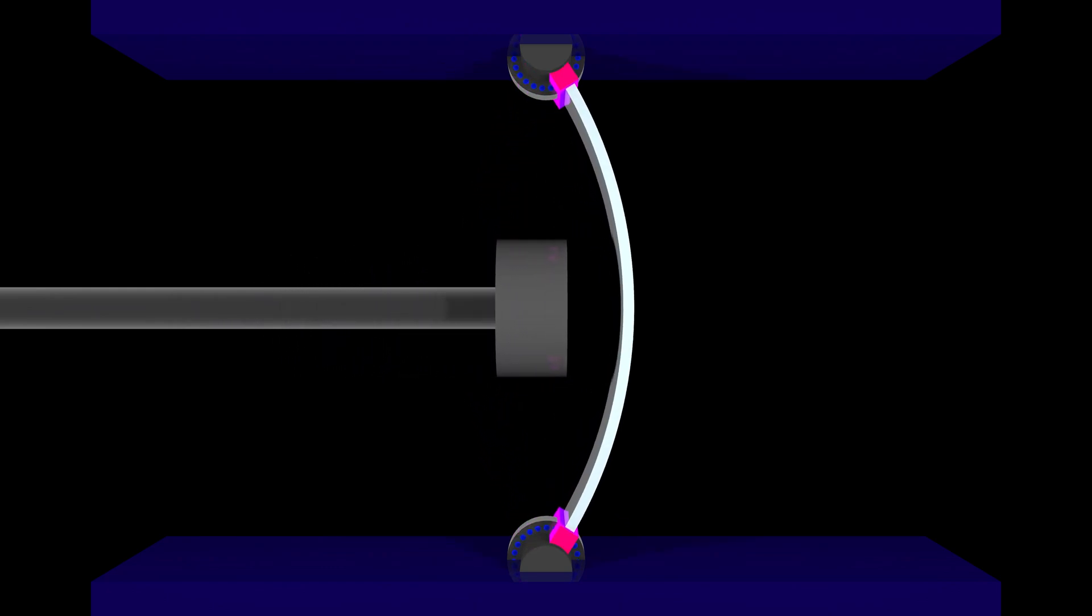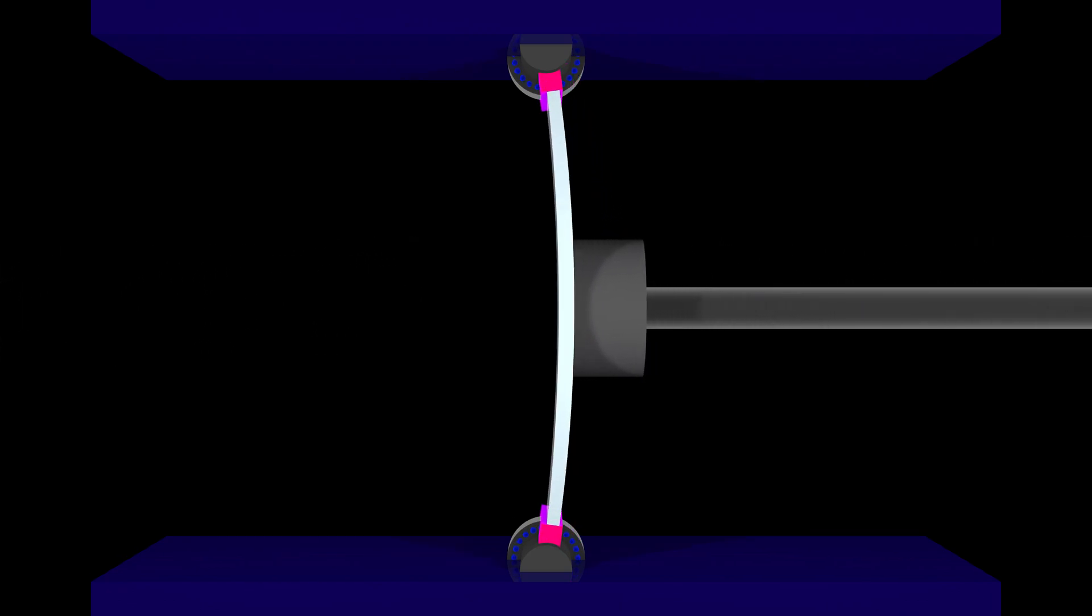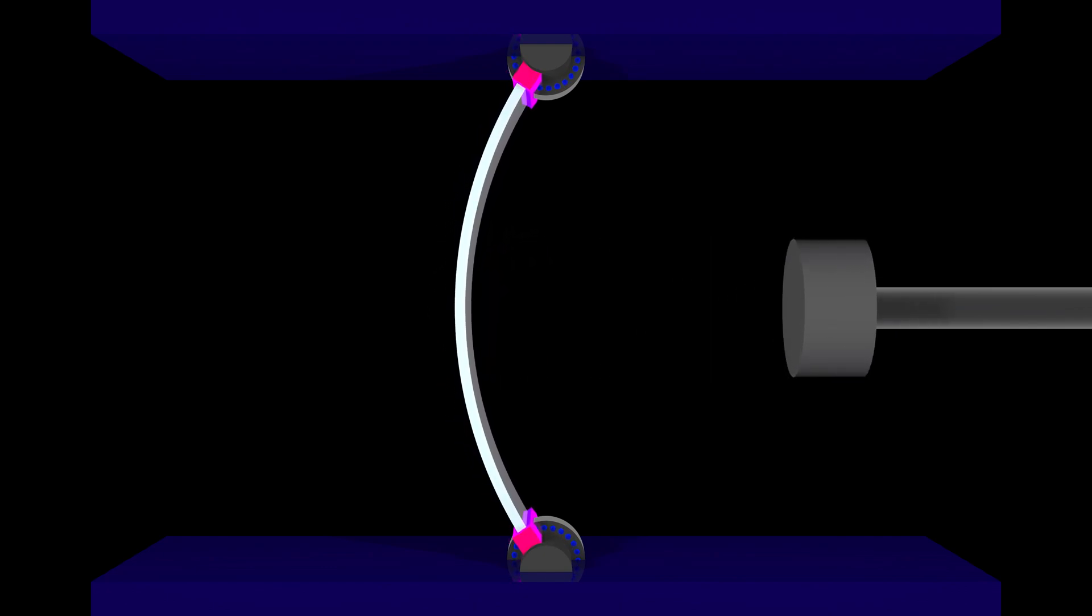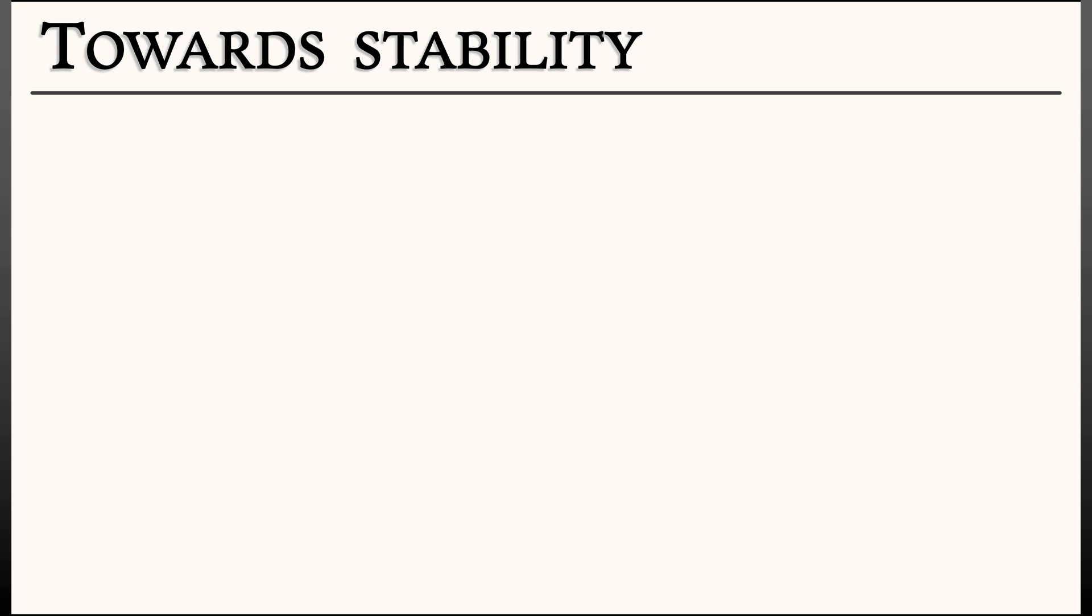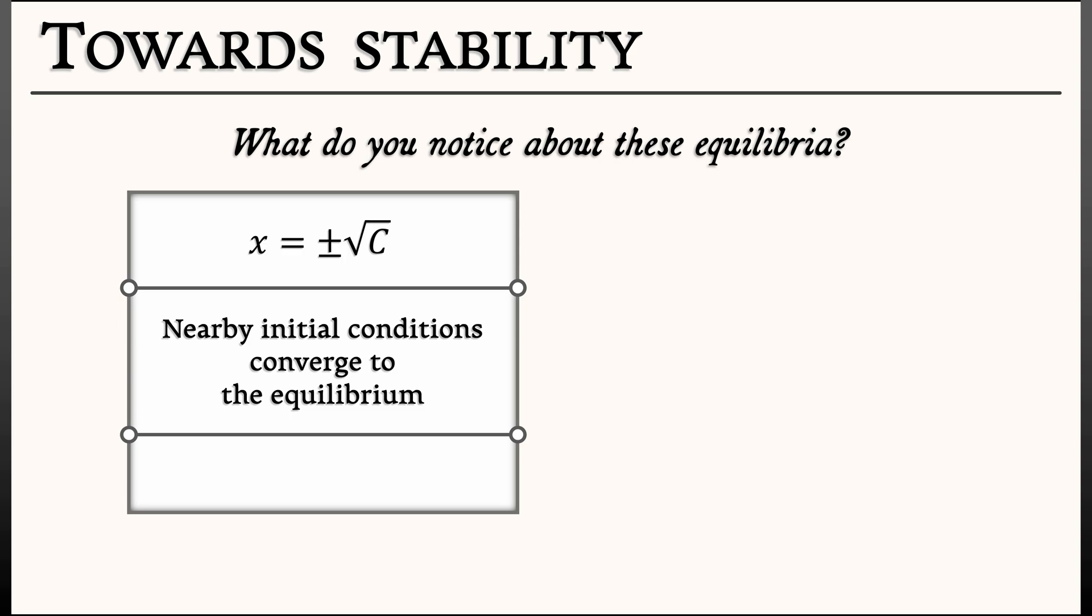And so in this system, if you start off at some initial condition that is not one of these equilibria, what's going to happen? You're just going to deform out to one of these two equilibria. Now, this is very interesting. These equilibria are exhibiting different qualitative features, different types of stability. Consider the equilibria at plus or minus square root of C. If you perturb away from that equilibrium a little bit and let it go, what happens? You move straight back to the nearby equilibrium. In this case, when nearby initial conditions converge back to your equilibrium, we call that a stable equilibrium.